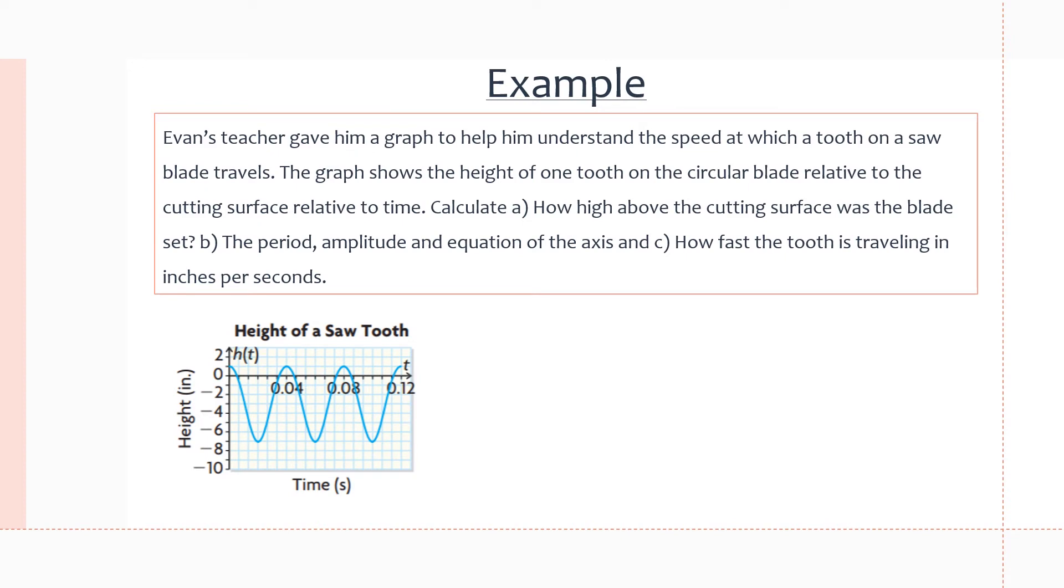Here is the next example. Evan's teacher gave him a graph to help him understand the speed at which a tooth on a saw blade travels. The graph shows the height of one tooth on the circular blade relative to the cutting surface relative to time. There's a saw blade on a desk, and we are cutting through a cutting surface and back up, doing a periodic motion of up and down. Calculate A: how high above the cutting surface was the blade set, B: the period, amplitude, and equation of the axis, and C: how fast the tooth is traveling in inches per second.